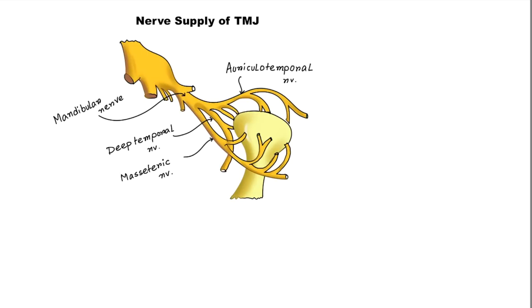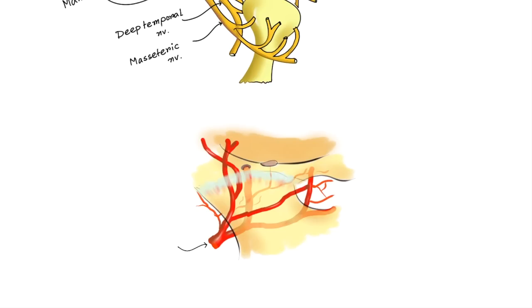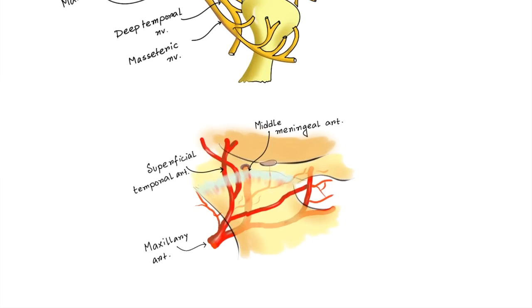The vascular supply of TMJ is mainly provided by the superficial temporal artery, middle meningeal artery, and internal maxillary artery. Other important arteries — the deep auricular, anterior tympanic, and ascending pharyngeal — also supply the TMJ.